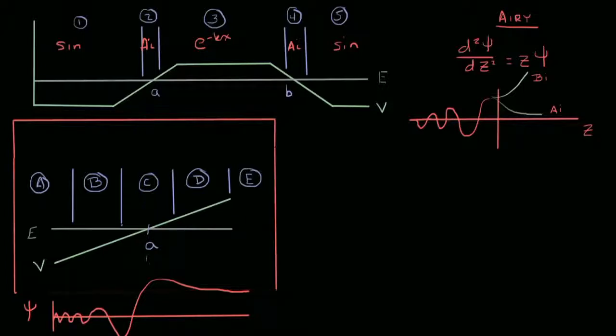We know on the right that we have some sort of exponential decay as E is less than V, and we know on the left that as we move from left to right, the difference between E and V is decreasing, so the magnitude will increase and the frequency will increase as well.